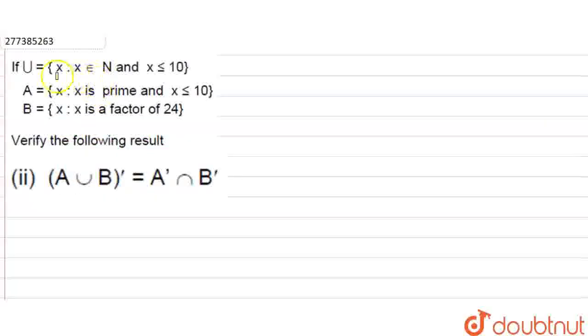Hello everyone, the question is: if the universal set is equal to {x: x belongs to natural numbers N and x ≤ 10}. So basically, what is the universal set? x belongs to natural numbers, so x will start from 1 and x will be less than or equal to 10.